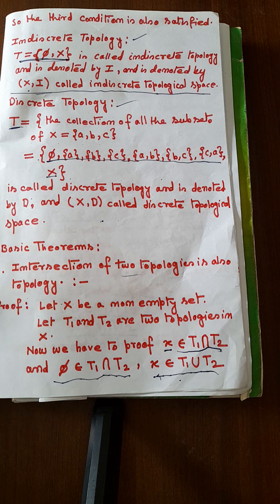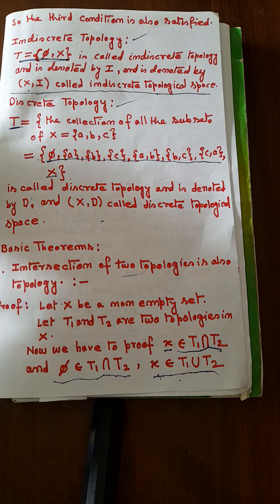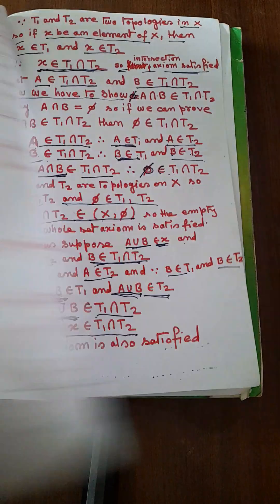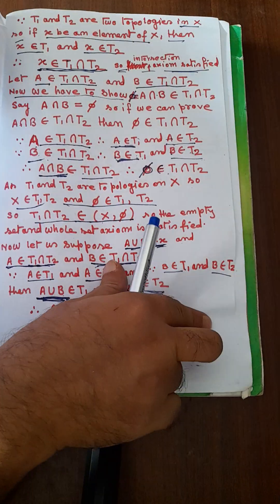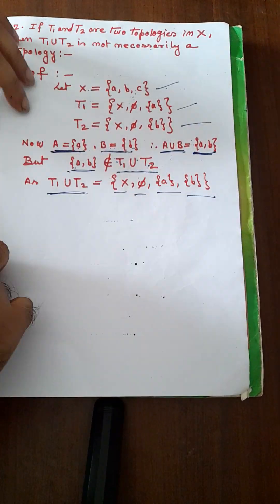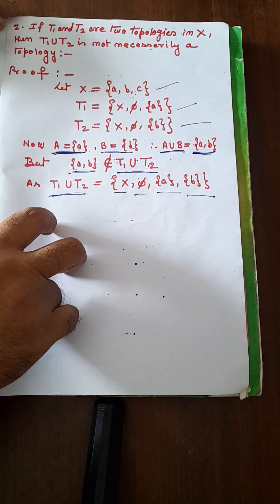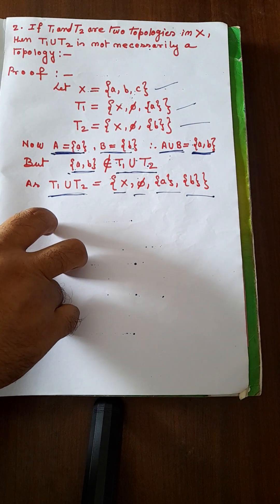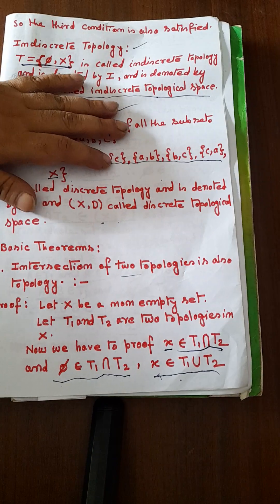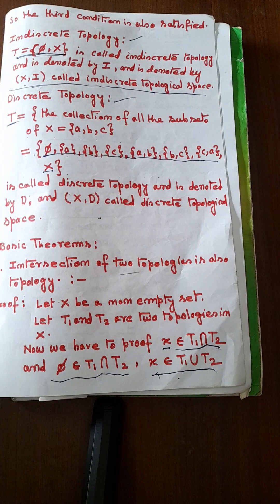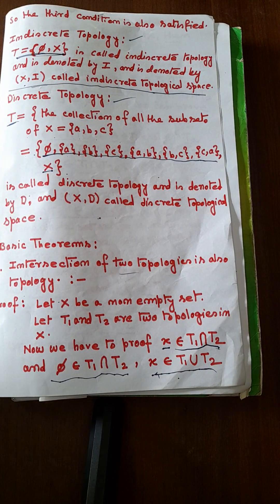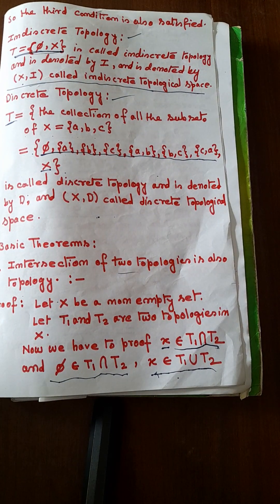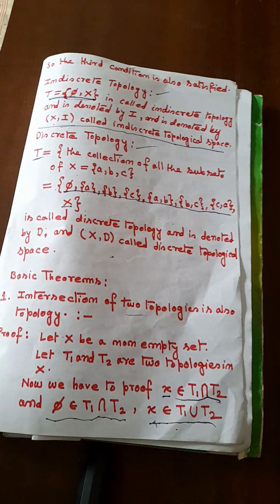So, the intersection of two topologies is always a topology, but the union of two topologies may not be a topology. Thank you for watching — please subscribe to my channel for more videos like this.